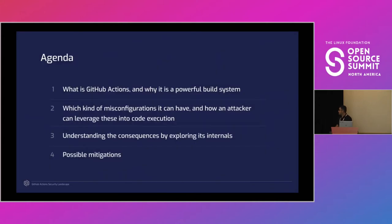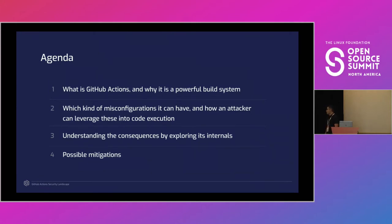So let's get into the agenda. First we're going to explore what GitHub Actions is and why it's a really powerful CI/CD system. Then we'll look at what kind of misconfigurations GitHub Actions could have and how an attacker could leverage this into code execution. Then we'll explore the consequences of this code execution by examining GitHub Actions internals, with several demos, and finally list possible mitigations.